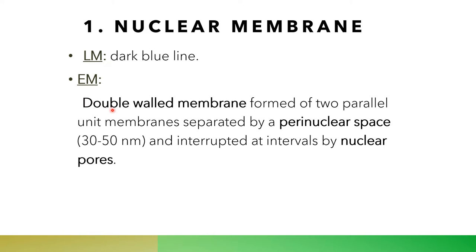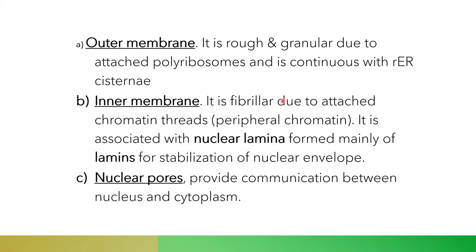By electron microscopy, the nuclear membrane is formed of two layers parallel to each other, separated by perinuclear space of 30 to 50 nanometers, and interrupted at intervals by nuclear pores. The outer membrane is rough and granular due to attachment of polyribosomes and is continuous with the rough endoplasmic reticulum. The inner membrane is fibrillar due to attachment of chromatin thread — the so-called peripheral chromatin — and is associated with nuclear lamins, intermediate filaments that stabilize the nuclear envelope. The nuclear pores provide communication between the nucleus and the cytoplasm.